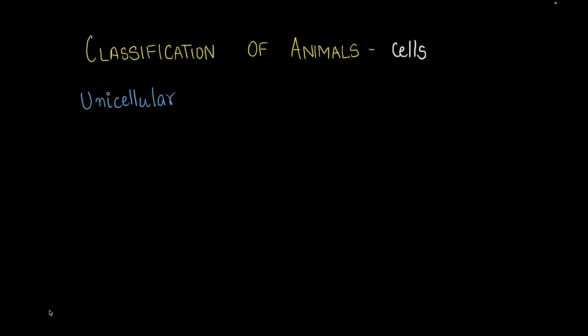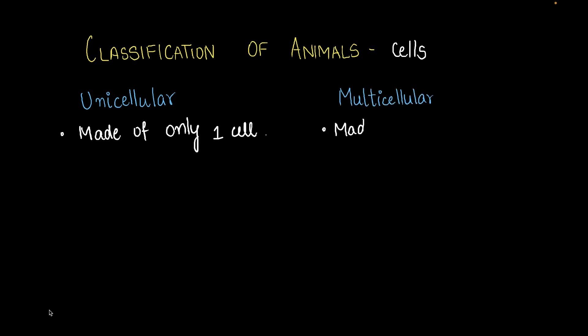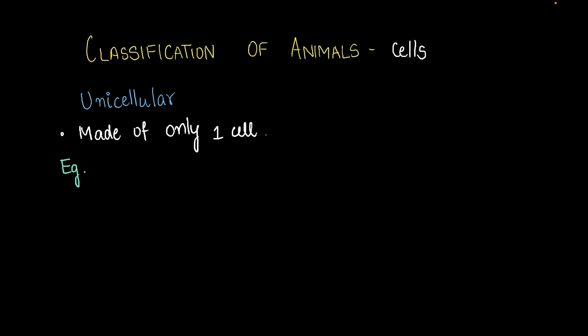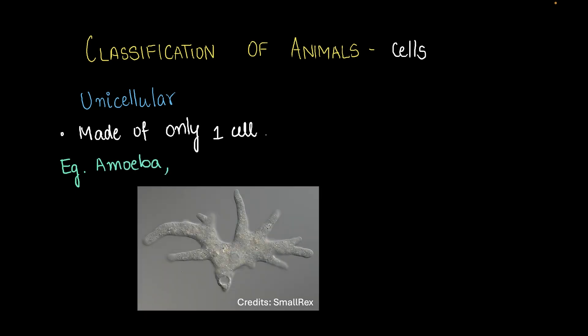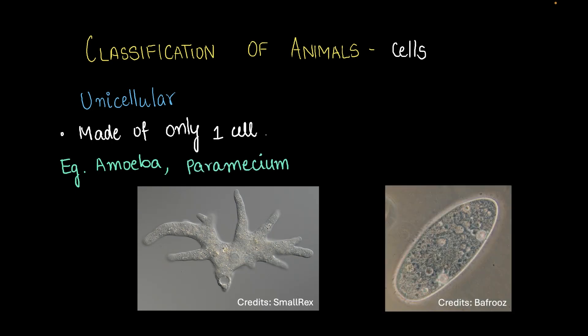We've got unicellular animals. These animals are made up of only one cell. These are usually very small and can be seen only through a microscope. An example of a unicellular animal is amoeba — a really small jelly-like animal that can be seen only through the microscope. Similarly, we've got paramecium, which is also really tiny and can be seen only through the microscope.